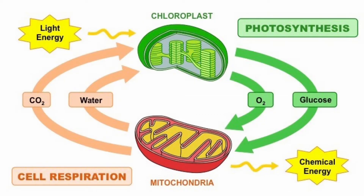Photosynthesis and cellular respiration are interconnected and essential to life on Earth. These systems allow the carbon and the oxygen that organisms consume and produce to be cycled through the ecosystem. They work together so that what is made from one process is used in the other. Without them, the ecosystem would run out of carbon dioxide and oxygen, which means all the plants would die and oxygen-requiring life would not survive.